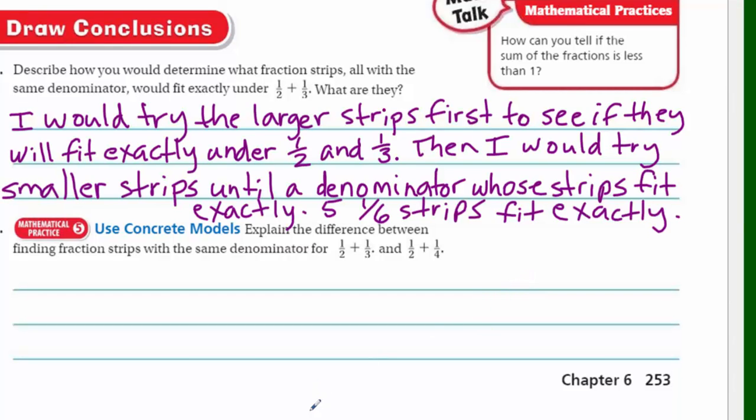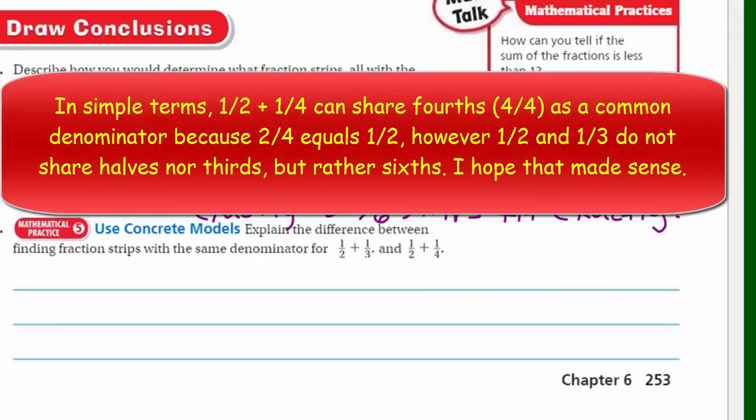So I would start with the larger strips first, but then I would work my way down to the smaller strips until I could find a denominator whose strips will fit exactly. And in this case, I would have five one-sixth strips would fit. So now it says, mathematical practice five says use concrete models. Explain the difference between finding fraction strips with the same denominator for one-half plus one-third and one-half plus one-quarter. Well, I don't know. I think what they're asking here is explain the difference between finding fraction strips with the same denominator.